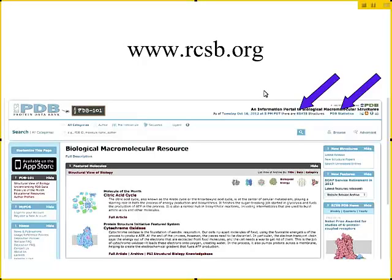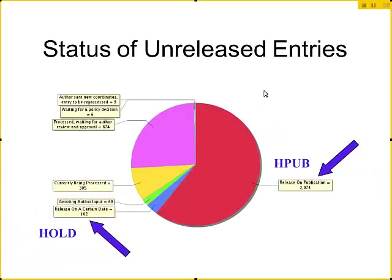So there are currently 94,000 structures — 94,715 — in the protein data bank. The protein data bank is updated every Wednesday, so there are a lot of structures you can search through here. The structural biologist — the experimentalist — when they determine a structure, they are going to deposit it into the protein data bank.